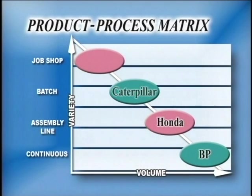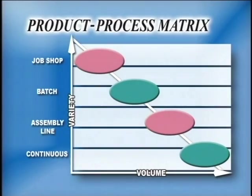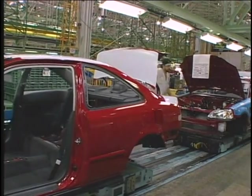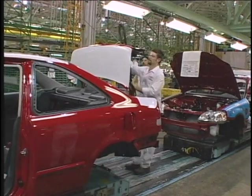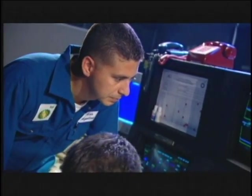The product-process matrix illustrates the general rules of manufacturing, or production processes. Finding and using the appropriate process is necessary to ensure quality and keep costs low enough to match the market demand and volume. It is unusual, however, that a product will fit so neatly into one process or another, and many products depend on several processes for their creation. These hybrid processes are becoming more and more common.